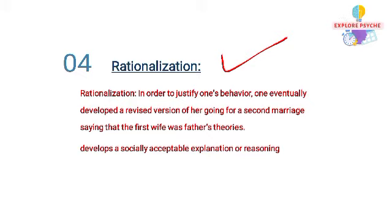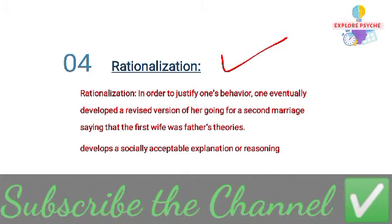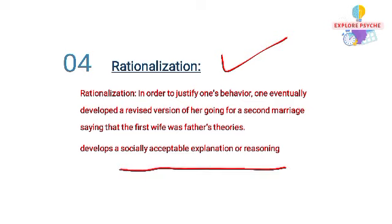For example, a person believes his own wrongdoing and justifies it to himself. He gives his own acceptable reason to explain his misbehavior, rather than accepting the truth. That is rationalization — explaining one's own misbehavior with a self-justifying reason.